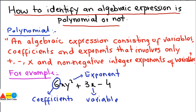What is a term? Here this is one term, this is the second, and this is the third. So this algebraic expression consists of three terms. Now let's see what conditions are required to identify whether a given expression is a polynomial or not.